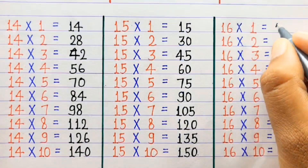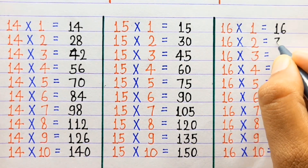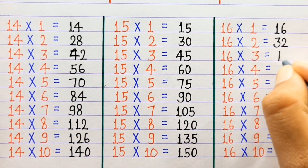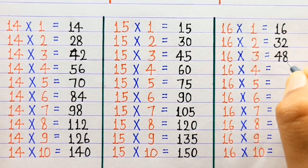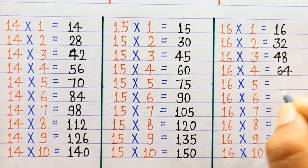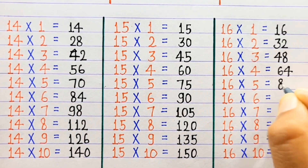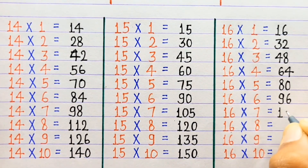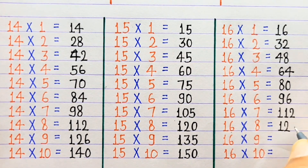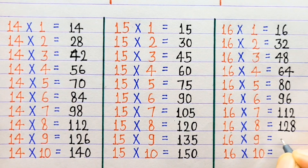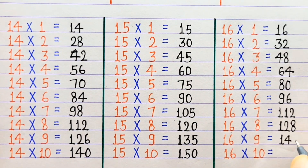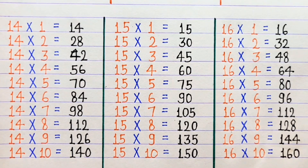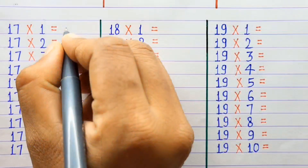16×1=16, 16×2=32, 16×3=48, 16×4=64, 16×5=80, 16×6=96, 16×7=112, 16×8=128, 16×9=144, 16×10=160.